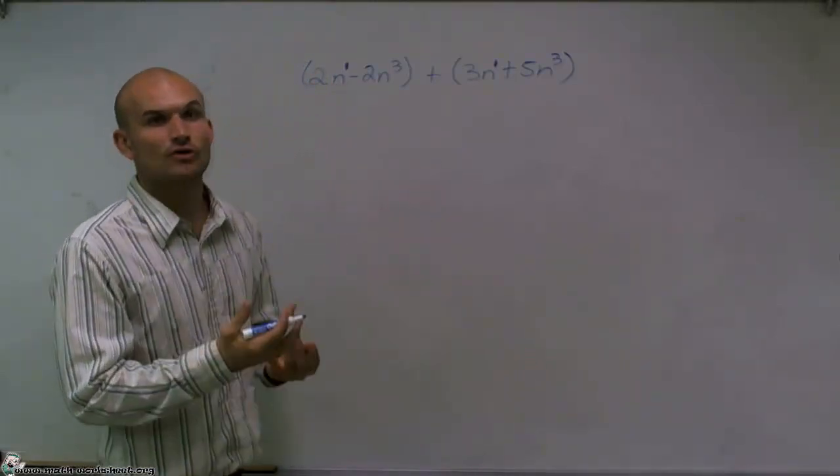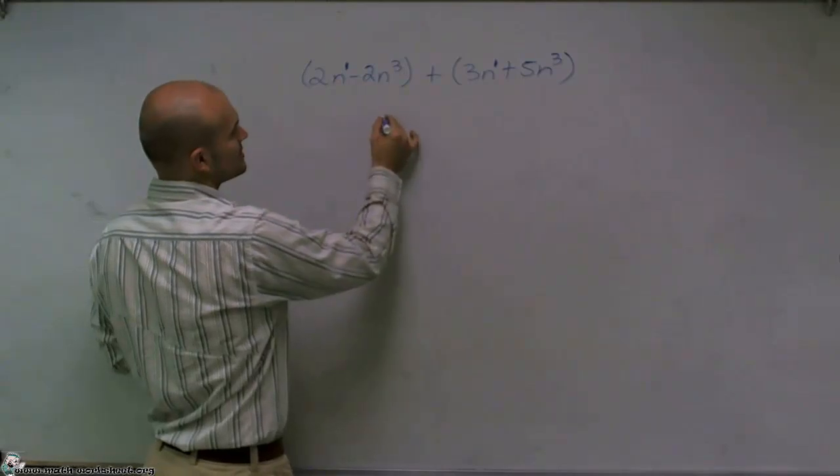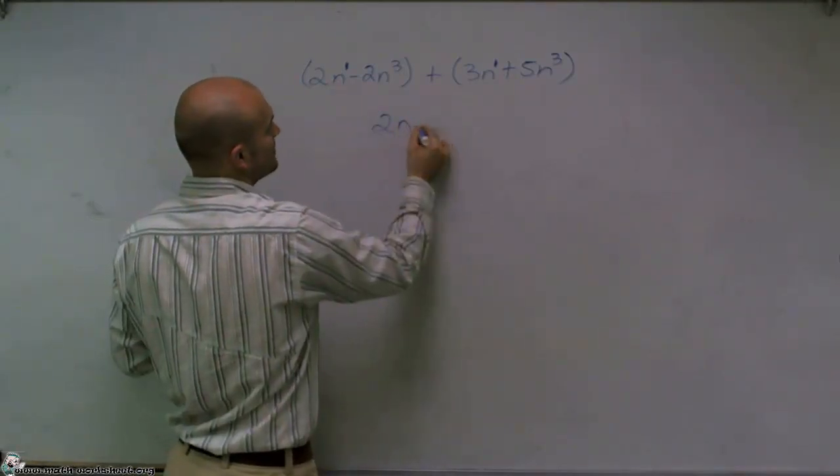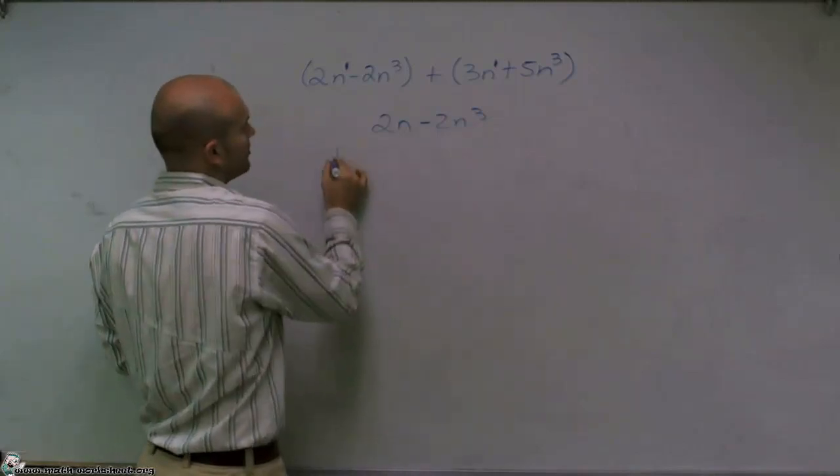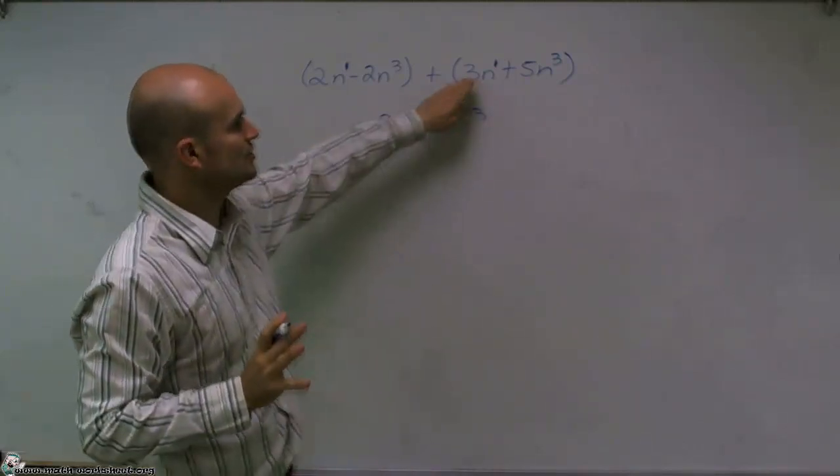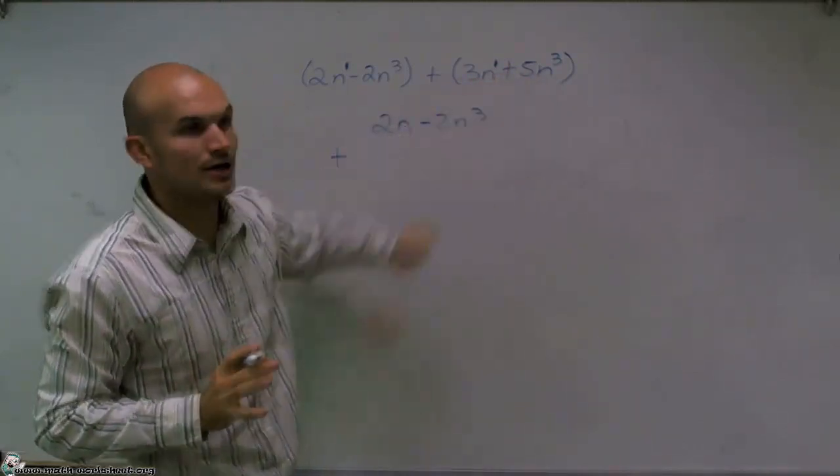So the first thing I'm going to do is I'm going to write 2n minus 2n cubed. Now it's really important for you to make sure that you align your polynomials correctly.